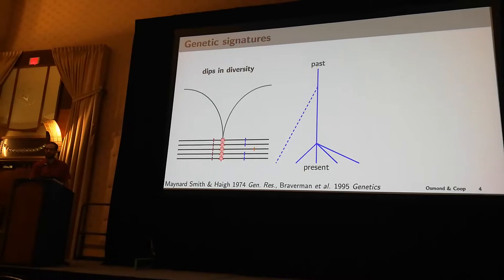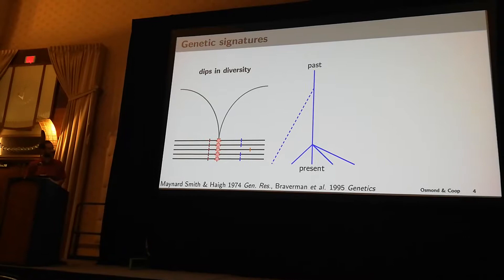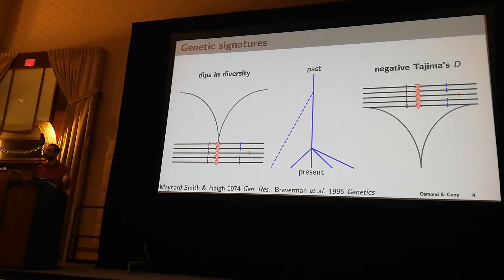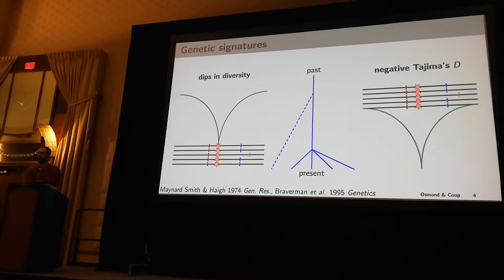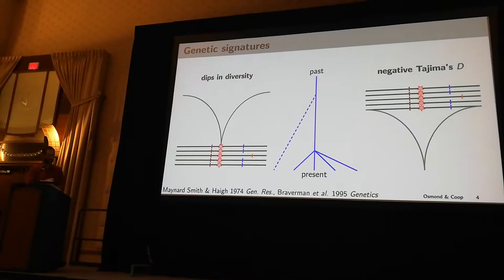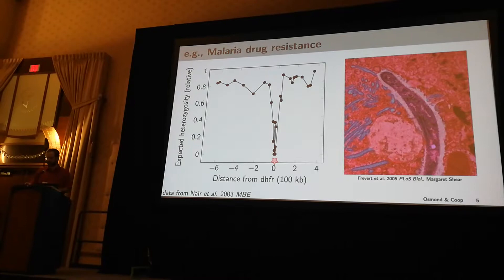However, this is still a skew in the gene genealogies as expected under neutrality, which leads to skews in the site frequency spectrum, which then leads to signatures in summary statistics of the site frequency spectrum, such as strongly negative Tajima's D around the selected site, due to an excess of high frequency and low frequency mutations caused by these gene genealogies.